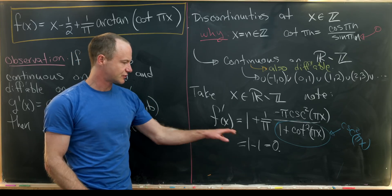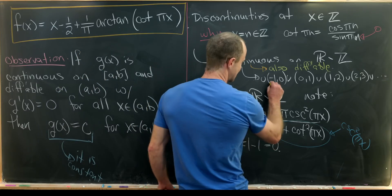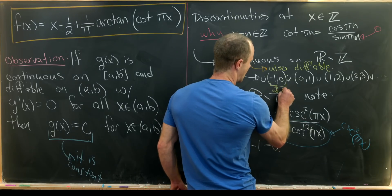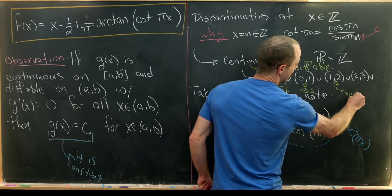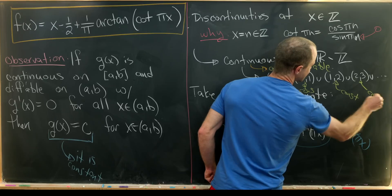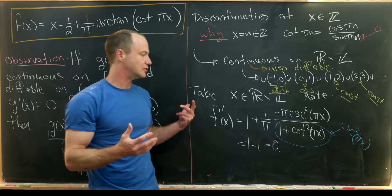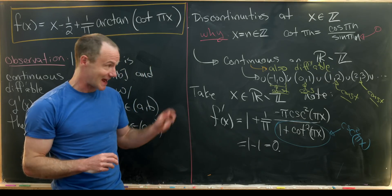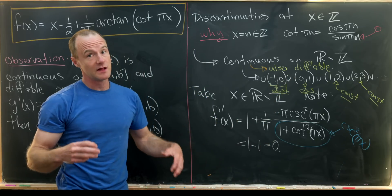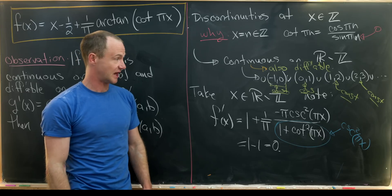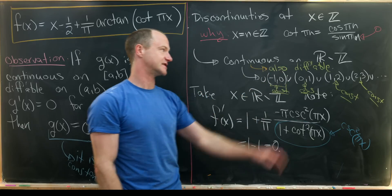Using the trig identity 1 plus cotangent squared equals cosecant squared, the cosecant squared terms cancel, and the pi cancels with the one in the denominator, giving us 1 minus 1, which equals zero. So the derivative is always zero on our domain. That tells us the function is constant on each of the open intervals — it may not be the same constant, since the value can change at each discontinuity, but it is constant on each individual interval.